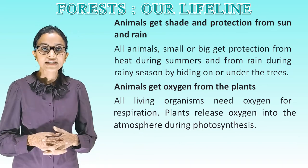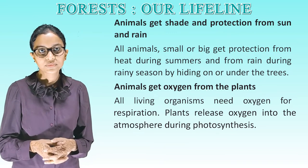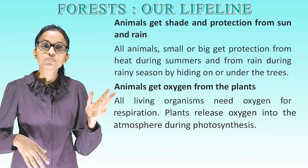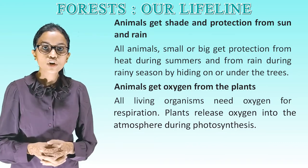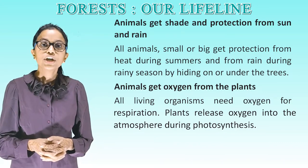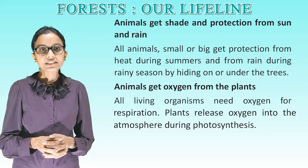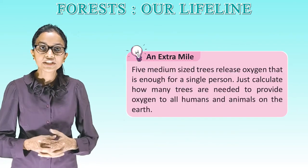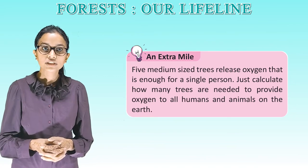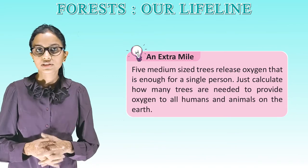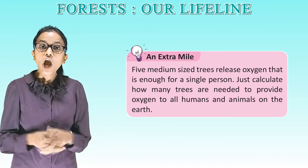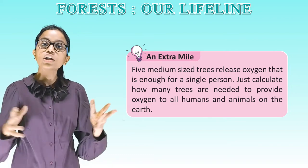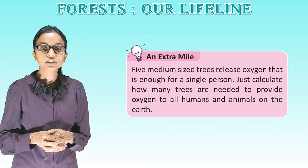Animals get oxygen from plants. All living organisms need oxygen for respiration. Plants release oxygen into the atmosphere during photosynthesis. Five medium-sized trees release enough oxygen for a single person — just calculate how many trees are needed to provide oxygen to all humans and animals on earth.